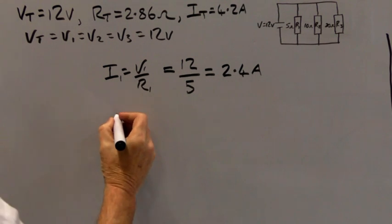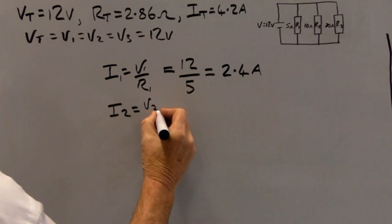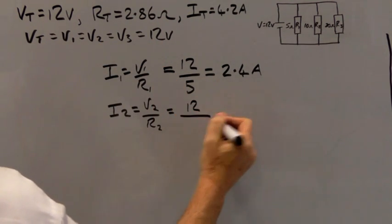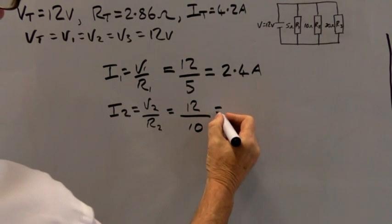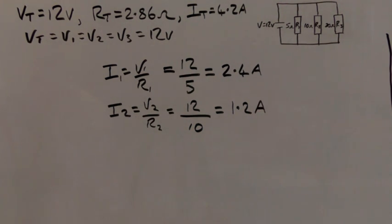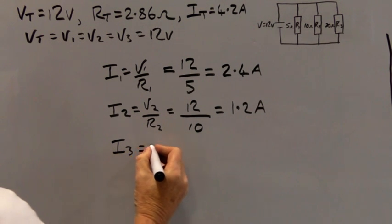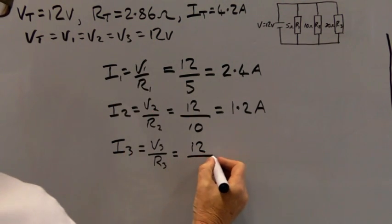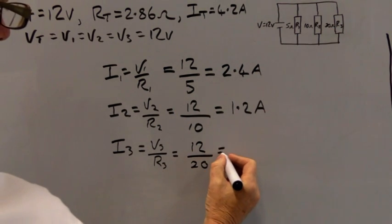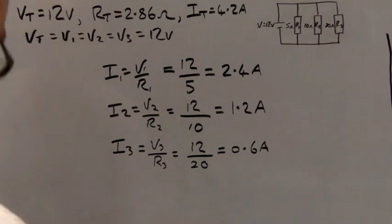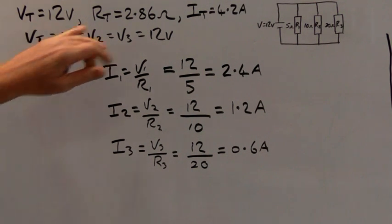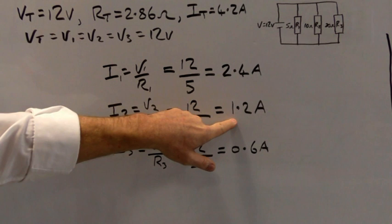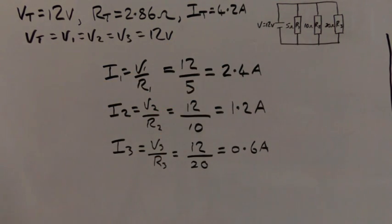For I2: I2 equals V2 divided by R2 equals 12 volts divided by 10 ohms, which equals 1.2 amps. For I3: I3 equals V3 divided by R3 equals 12 volts divided by 20 ohms, which equals 0.6 amps. Adding all these together to verify: 2.4 plus 1.2 plus 0.6 equals 4.2 amps, which matches our total current. This confirms our answers are correct.